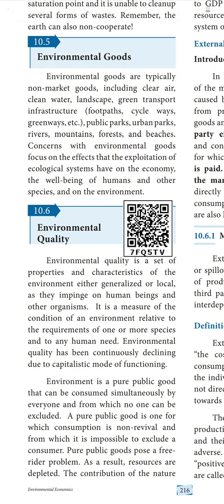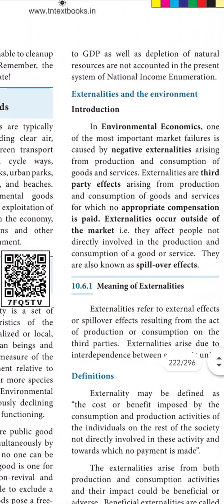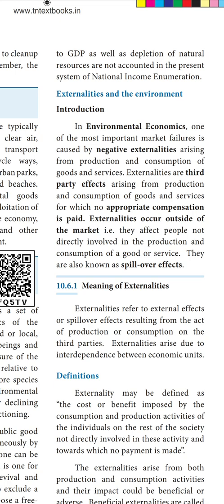Pure public goods pose a free rider problem. As a result, resources are depleted. When we are using the resources continuously, we are depleting the resources. The contribution of nature to GDP as well as the depletion of natural resources are not accounted in the present system of national income enumeration. We are utilizing all the natural resources but it is not considered in the national income enumeration.